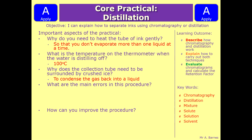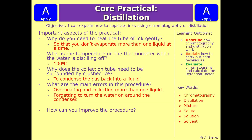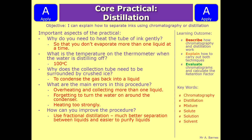What are the main errors in this procedure? The main one is overheating and collecting more than one liquid, so you might evaporate it and get two liquids coming off. Another is forgetting to turn the water on around the condenser, so you're not collecting the evaporated liquid quickly enough. Heating it too strongly can also break the glass and lead to more than one solution being collected. How can you improve the procedure? Simple distillation separates a couple of liquids, but if you've got more than that, go with fractional distillation, which gives much better separation and is easier to purify the liquids.